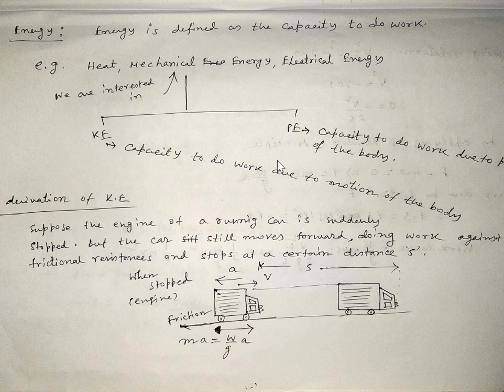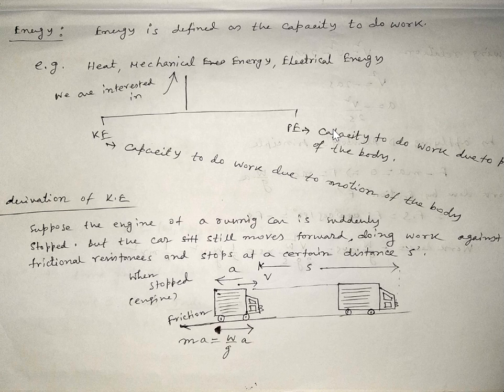Kinetic energy represents the capacity to do work due to the motion of the body. When a body moves with a certain velocity, it possesses energy that it can use to do work — that is called kinetic energy. Potential energy is the energy stored in a body due to its position or elevation. If a mass is raised to a height h, it stores energy calculated as mgh, which is called potential energy.